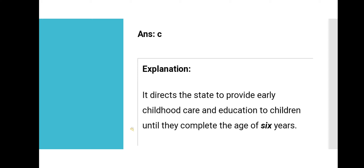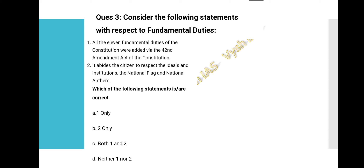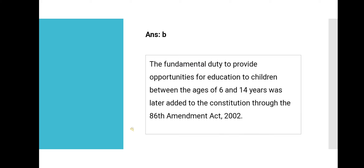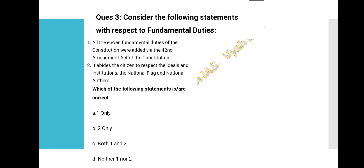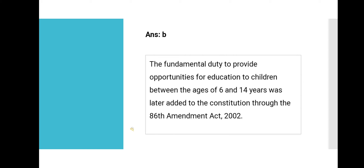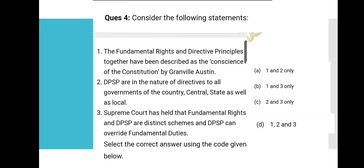Question 3: Consider the following statements with respect to fundamental duties. Statement 1: All 11 fundamental duties were added via the 42nd Amendment Act. Statement 2: It binds the citizen to respect the ideals and institutions, the national flag, and the national anthem. Statement 1 is wrong — the 11th fundamental duty was added by the 86th Amendment Act of 2002, not the 42nd. Statement 2 is correct. So the answer is 'two only,' that is Option B.